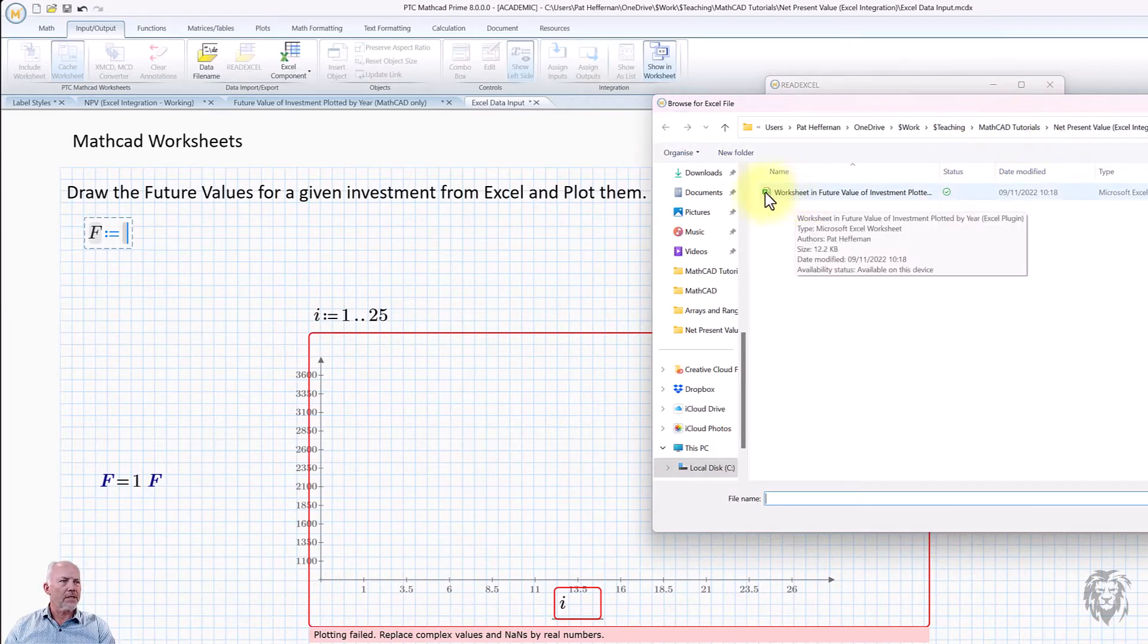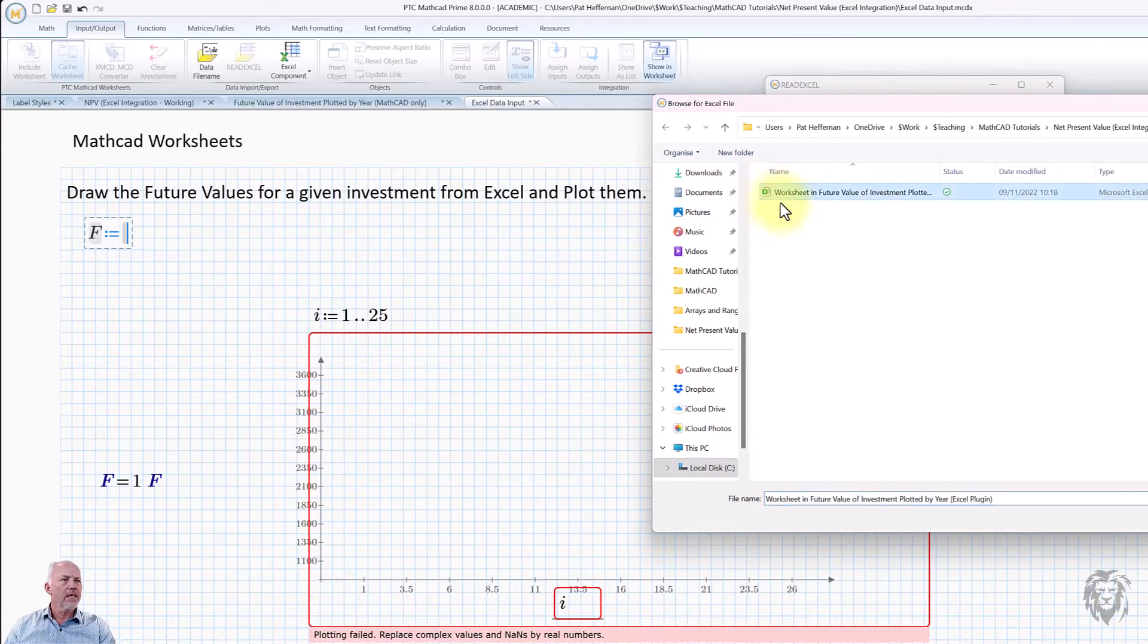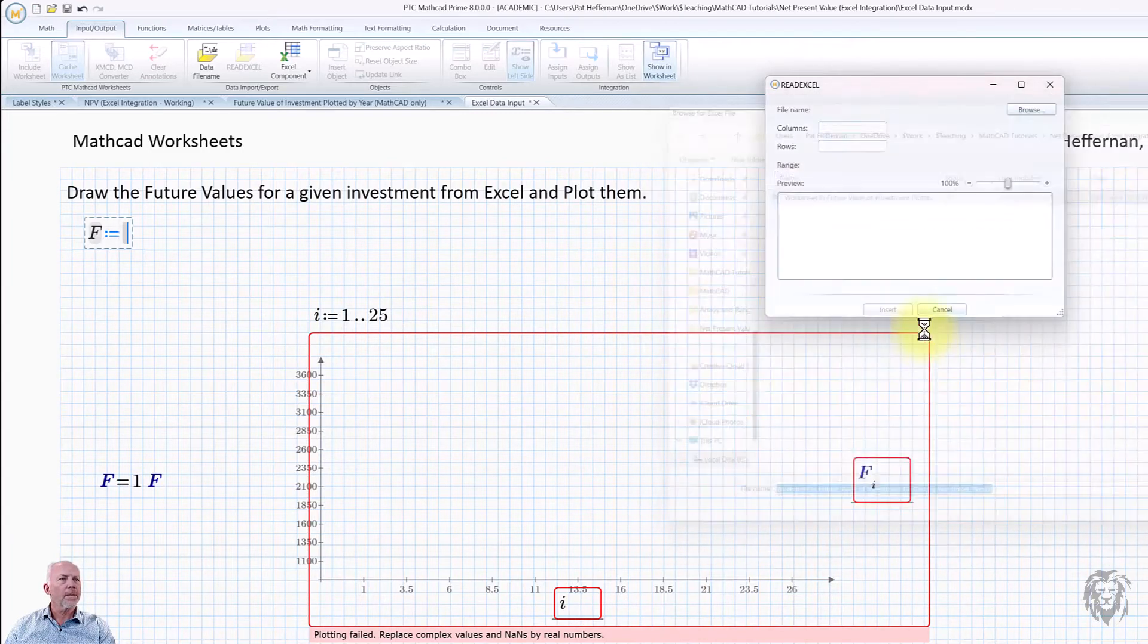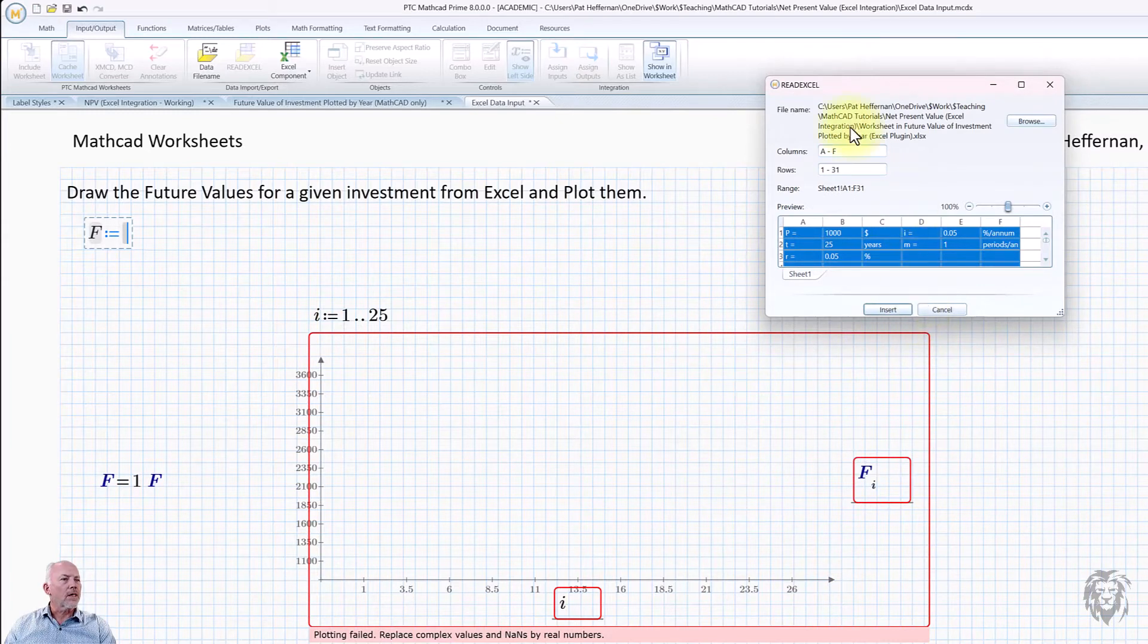I already have it set up to open there. Within my tutorials, I have this spreadsheet which has my calculations for future value. I'm just going to open it, press open.